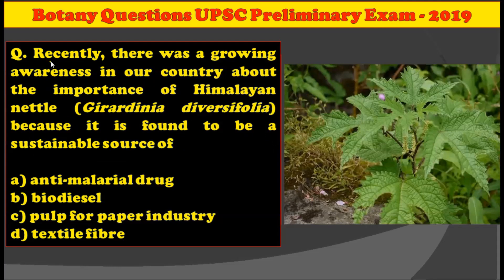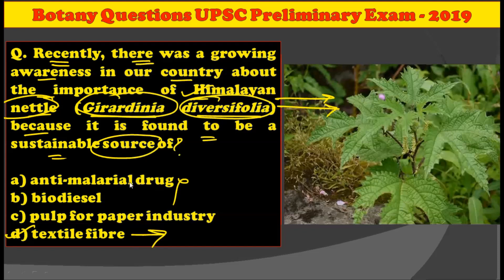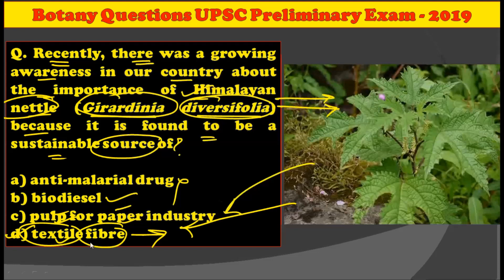The next question relating with botany is: recently there was growing awareness in our country about the importance of the Himalayan nettle, Girardiana diversifolia, because it is found to be a sustainable source of what? This plant is found in the Himalayan region and is commonly called the Himalayan nettle. It has been quite in the news since last year because it is a sustainable source for textile fibers. It is not used as an anti-malarial drug, not useful for biodiesel, and finds no application in the pulp and paper industry. So option T is the correct answer.